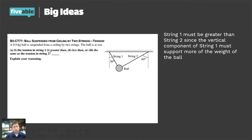String one must support more of the weight of the ball than string two does, and therefore must have more tension in it. If the angles were equal — both 45 degrees — then the tensions would be equal. But the more vertical angle requires more tension in the string to support the ball.